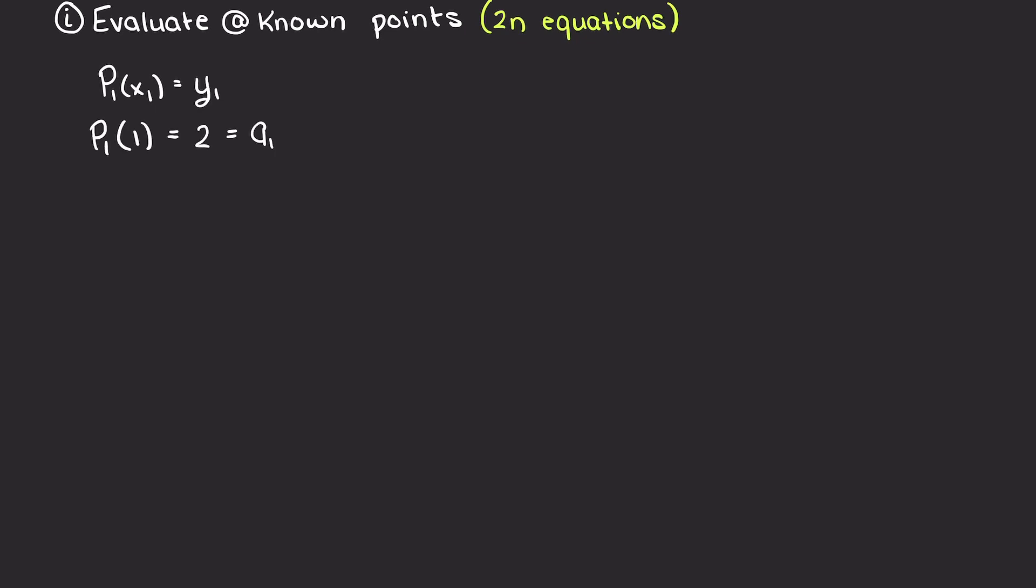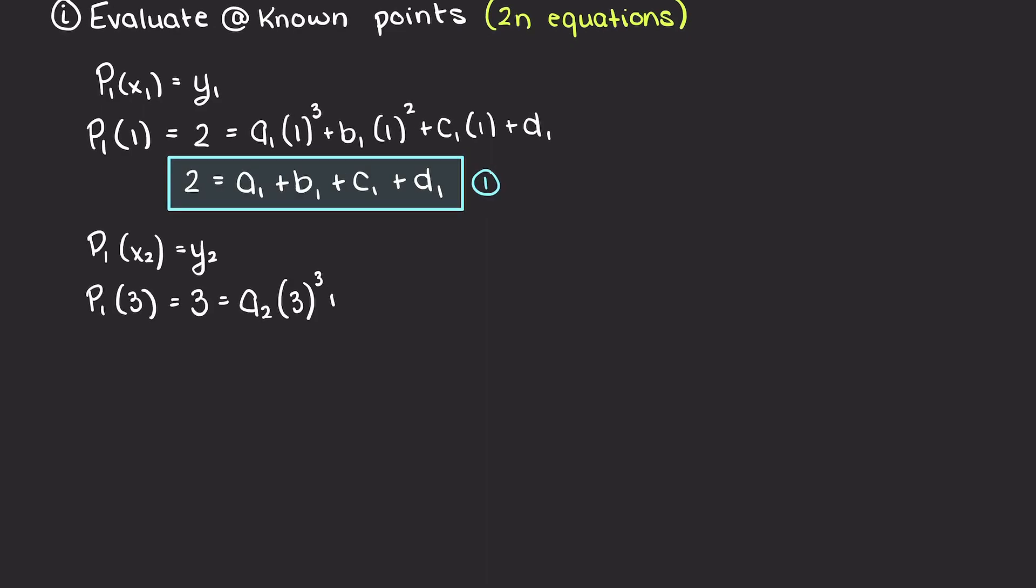As we learned in the previous theory video, we can get 2n equations through evaluating each of our three polynomial functions at our known data points. So, let's just go ahead and do that.